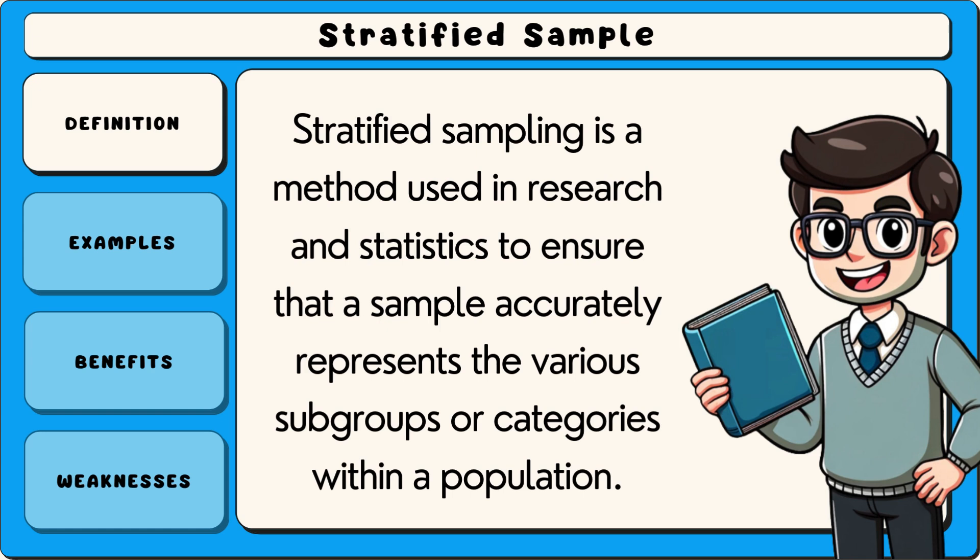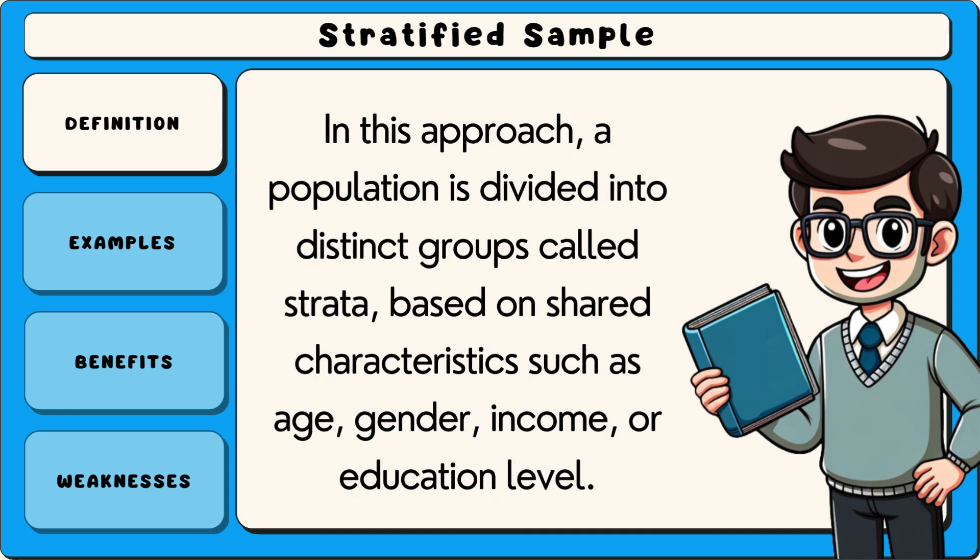Stratified sampling is a method used in research and statistics to ensure that a sample accurately represents the various subgroups or categories within a population. In this approach, a population is divided into distinct groups called strata, based on shared characteristics such as age, gender, income or education level.